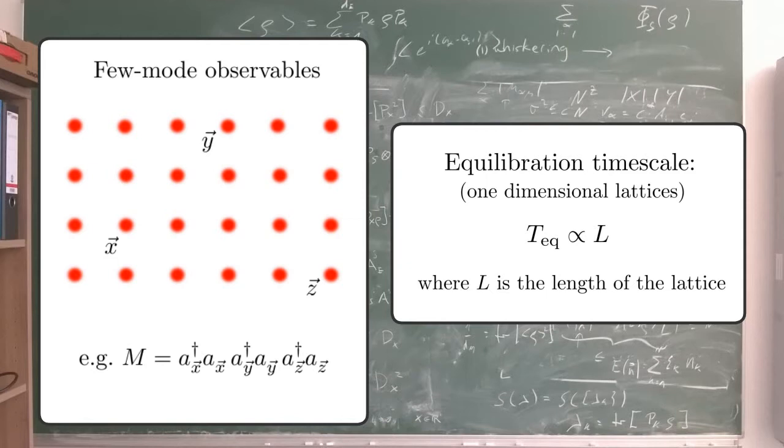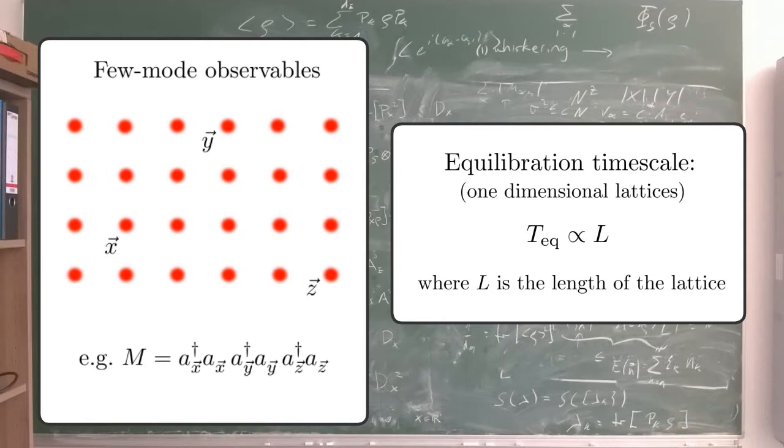These timescale bounds are much better than previous more general results, which were typically exponential in the system size. For more details, see the full paper.